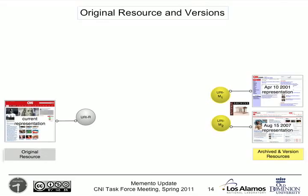This is the current state of the web. We have CNN on the left, which is its current homepage. In the Internet Archive, there's a whole bunch of different versions — such as from April 2001, August 2007, and so forth — and there's no connection between those resources. You can't get from CNN to the Internet Archive, and unless you deconstruct the URI, you can't get from the Internet Archive to CNN. So what we want to do is introduce something in the middle that allows us to make those negotiations.